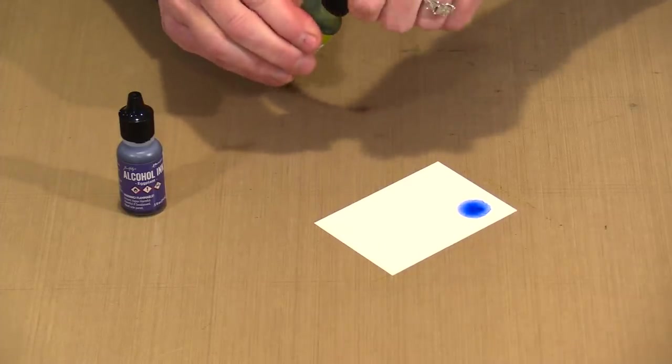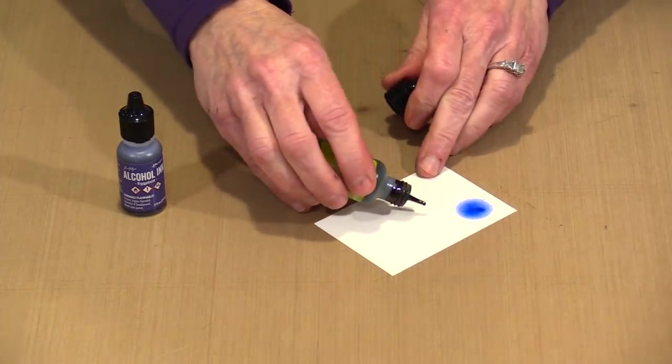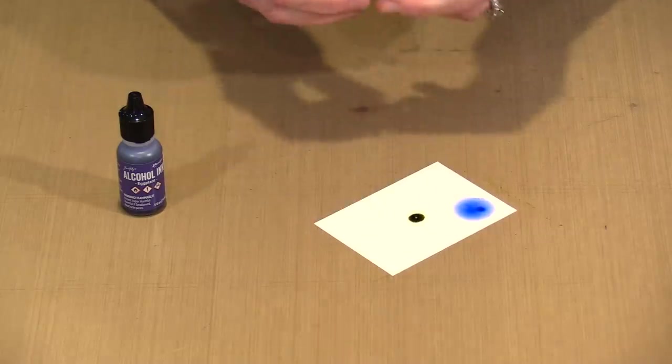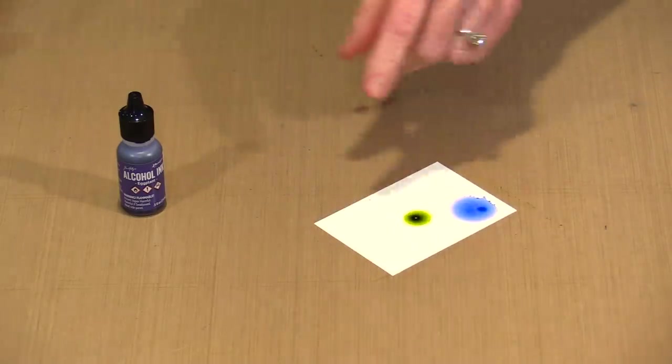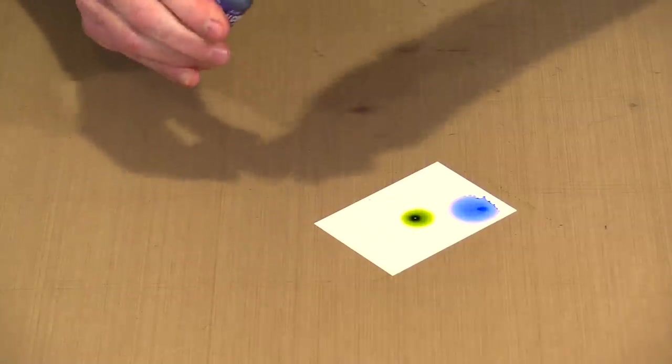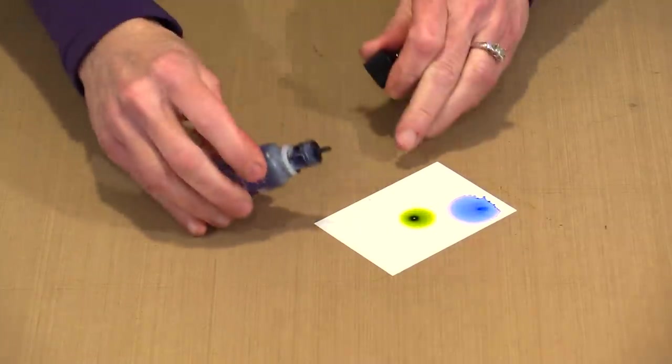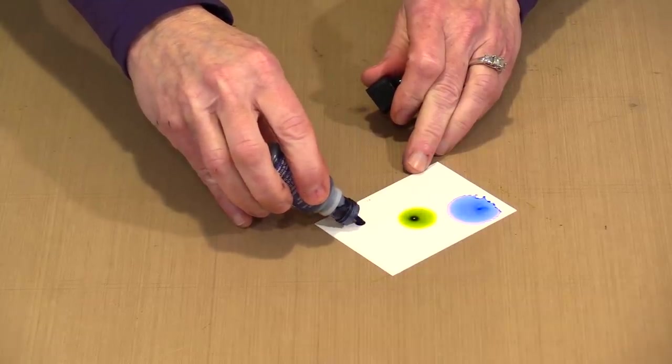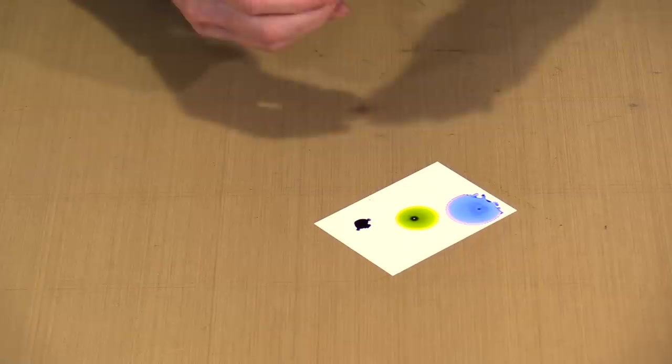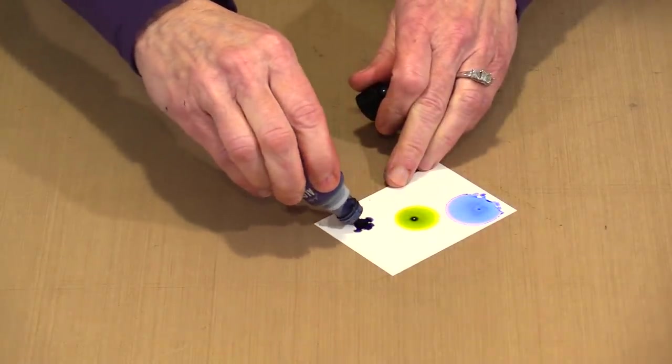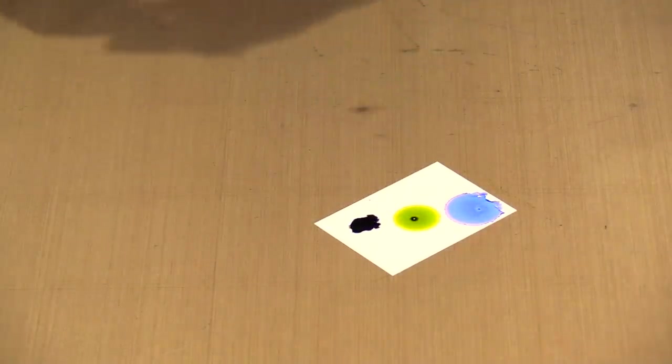Now alcohol ink is a beast that pretty much does what it wants to. Sometimes you're going to bloom and get nice round circles. Other times you're going to get these funky feathery edges. You just never know. You can manipulate and push alcohol around to a certain extent to get it to do what you want, but there are going to be times when it decides to do exactly what it wants.